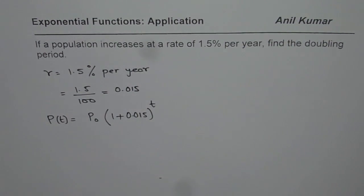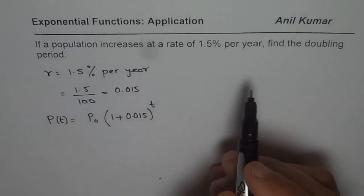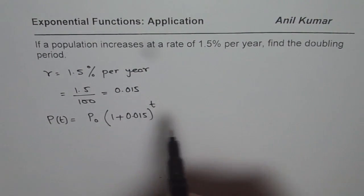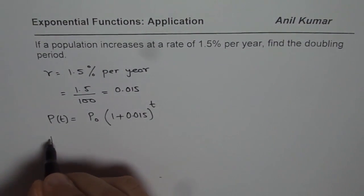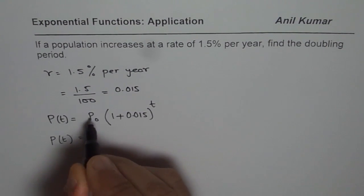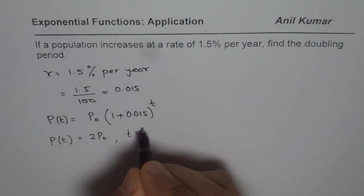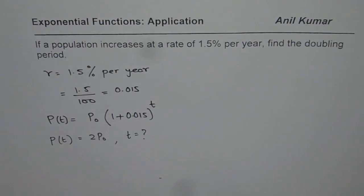So that is how you can make an equation. Now the question here is, if the population is increasing at this rate, find the doubling period. Doubling really means find the time when P(t) is equal to 2 times initial population. At this time you have to find what t is.